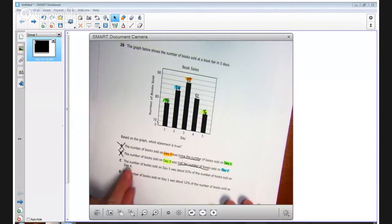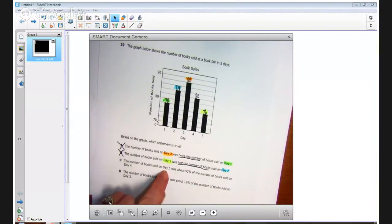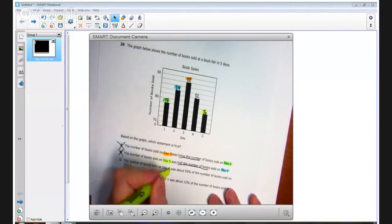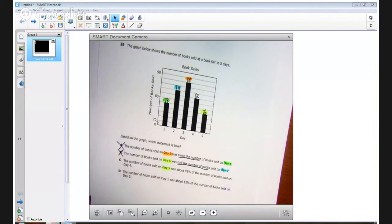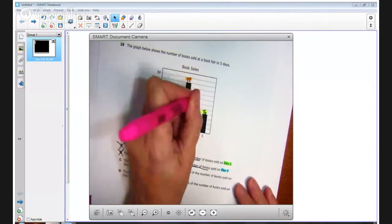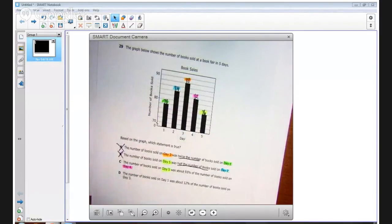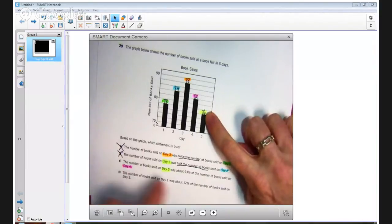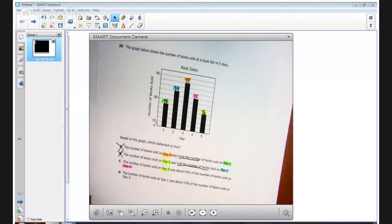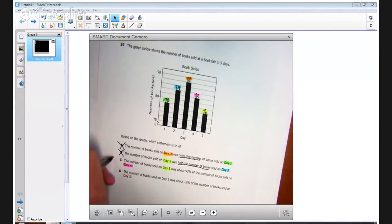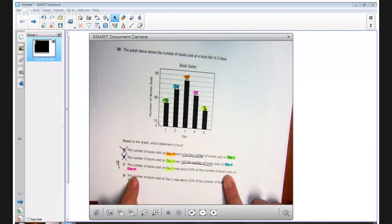Let's look at answer choice C. The number of books sold on day five, we've already highlighted that in yellow, so I'm going to highlight it in yellow again, was about 93% of the books sold on day four. It's the only one I haven't highlighted, so let me grab another color. So let's read. Day five was 76. Is that about 93% of the books sold on day four, which is 82? Well, maybe, but let's put a question mark on that one before we select that one. And then we can come back and do that calculation to see if it truly is 93%.